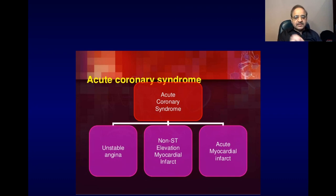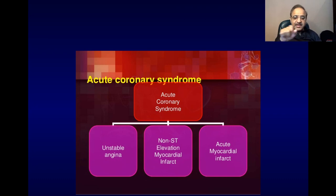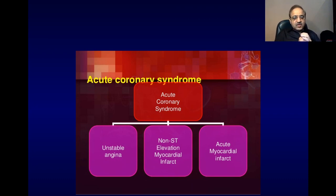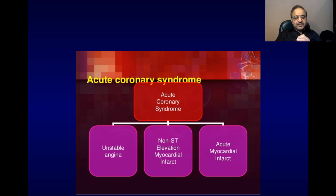In unstable angina there is erosion of the soft plaque — the plaque which is rich in fat, rich in inflammatory cells, and has a thin cap. If this thin cap erodes, platelets start depositing on the surface of the plaque. These platelets then release a substance called thromboxane A2, which leads to further accumulation of platelets on the surface of the plaque, and in addition there is coronary artery spasm.